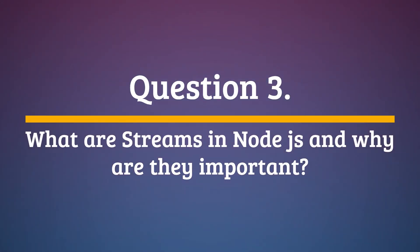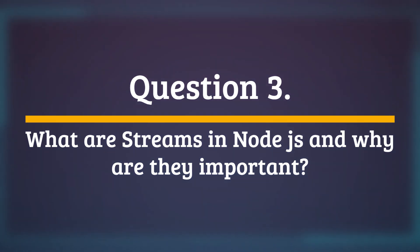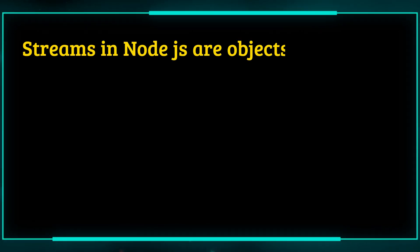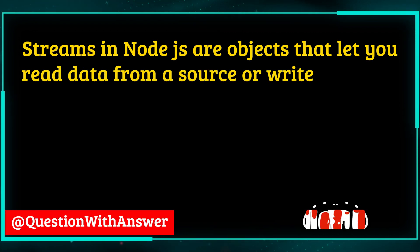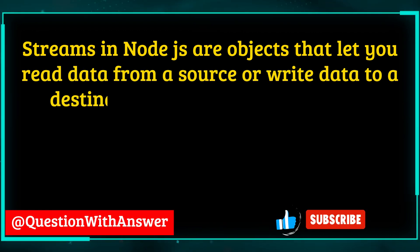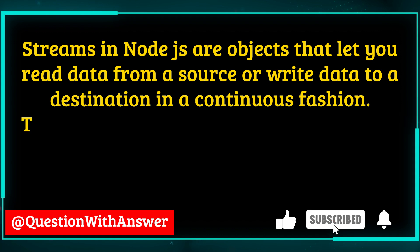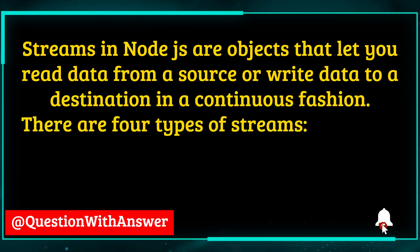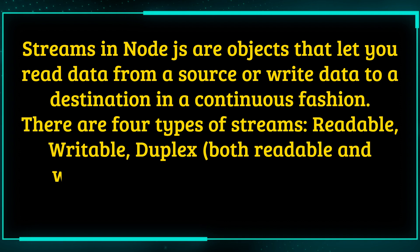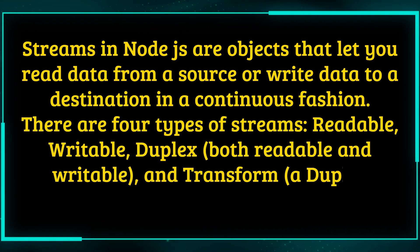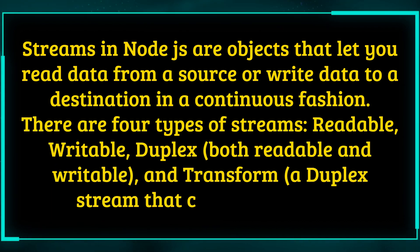Question 3. What are streams in Node.js and why are they important? Answer. Streams in Node.js are objects that let you read data from a source or write data to a destination in a continuous fashion. There are four types of streams: readable, writeable, duplex (both readable and writeable), and transform — a duplex stream that can modify data.